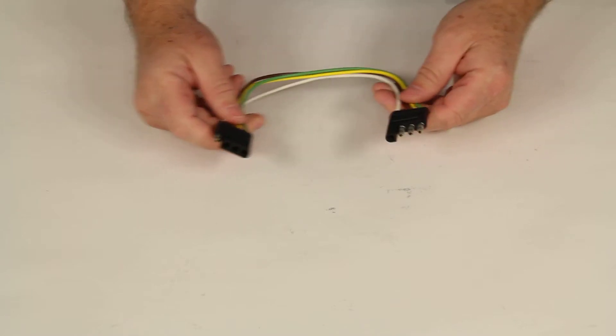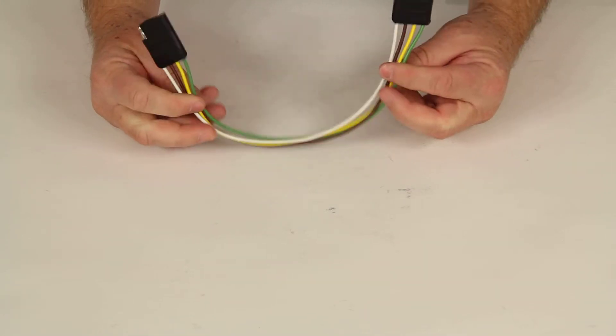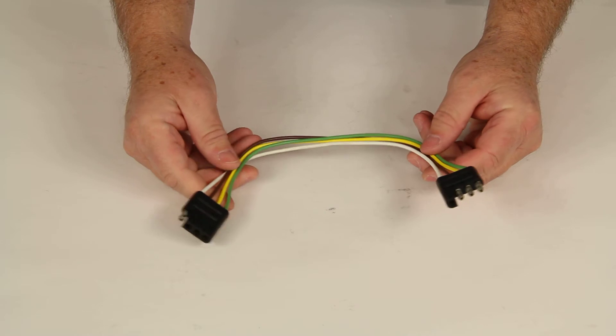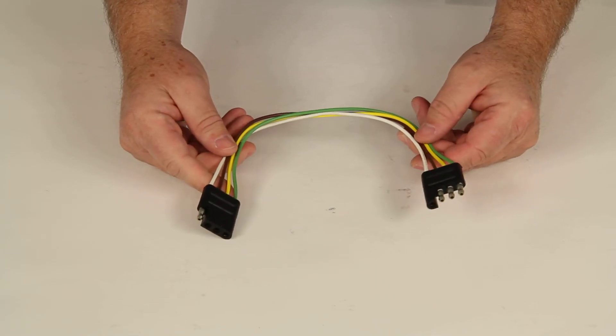But that should do it for the review on part number 9653P. This is the Spectro 4-way trailer connector car and trailer end loop.